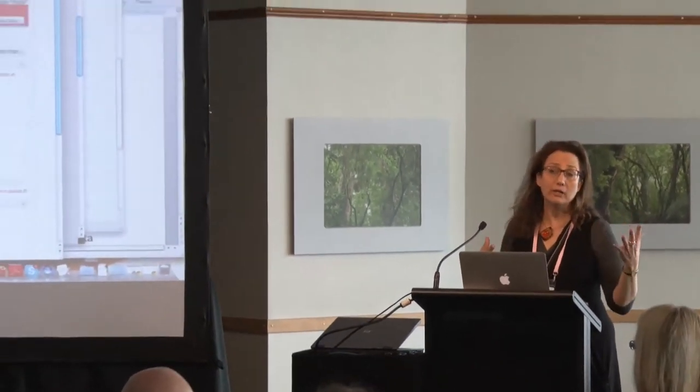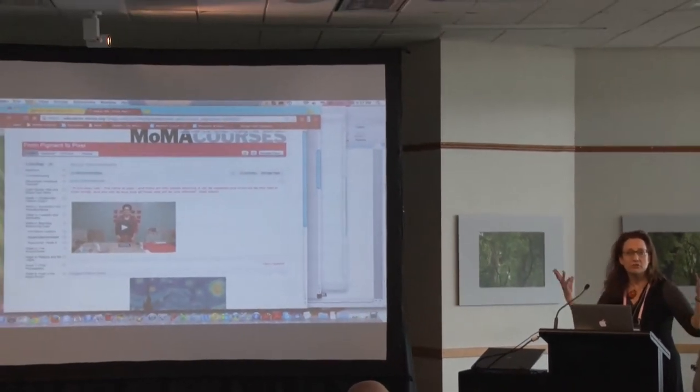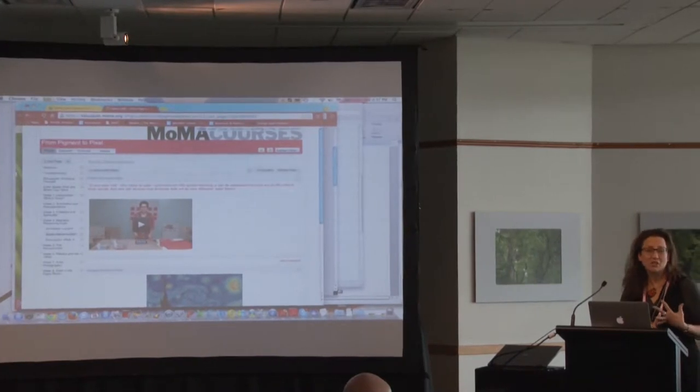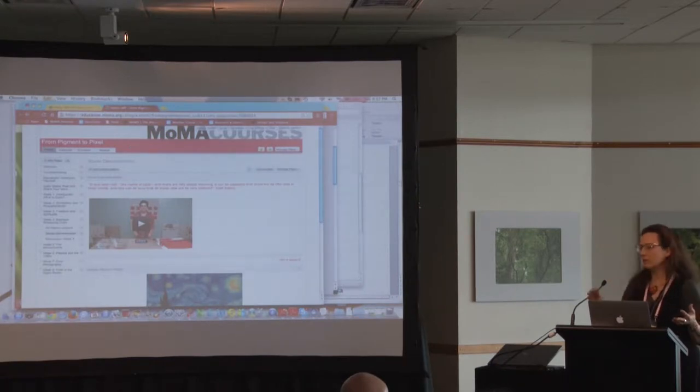What I have here is the actual course that we have offered for about a year and a half from our MoMA site. It's called From Pigment to Pixel. It's basically a quick look through the history of modern and contemporary art — largely considered because it also includes design and architecture — through the lens of color. So how did color affect the trajectory of modern and contemporary art?